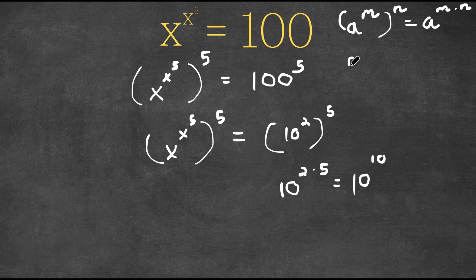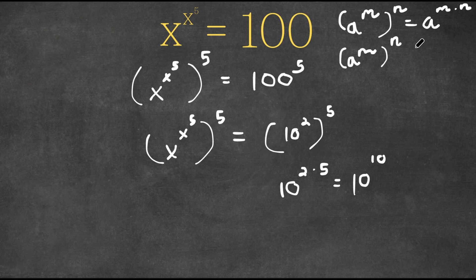Also, if we have something in the form a to the power of m to the power of n, because this is simply equal to a to the power of m times n, we could reverse these two, meaning this would also equal a to the power of n to the power of m.